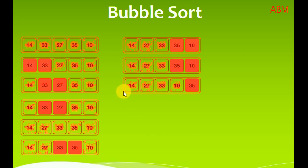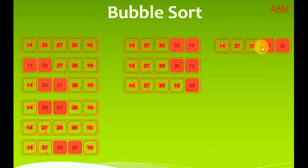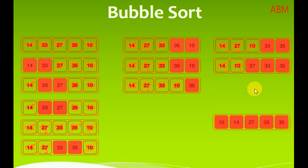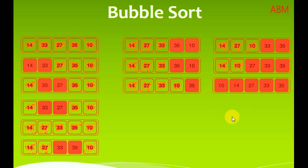In the second iteration, 33 is placed in its correct position. The third largest element is 27, and the third iteration places 27 in its correct location. After that, 14 is also placed in its correct position.